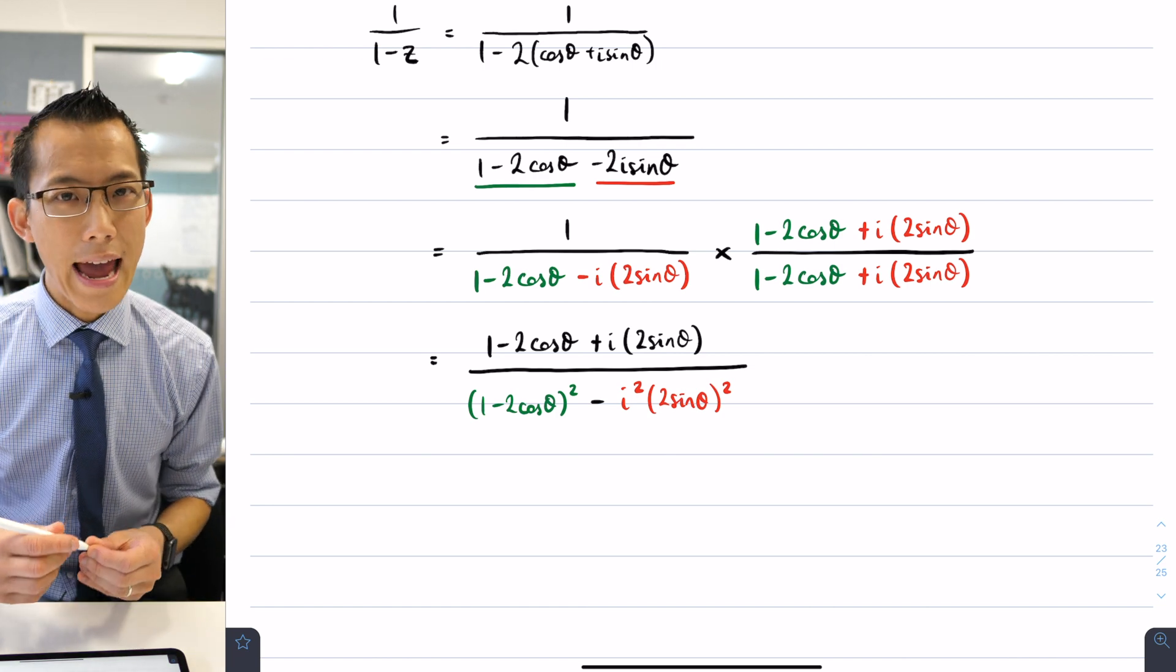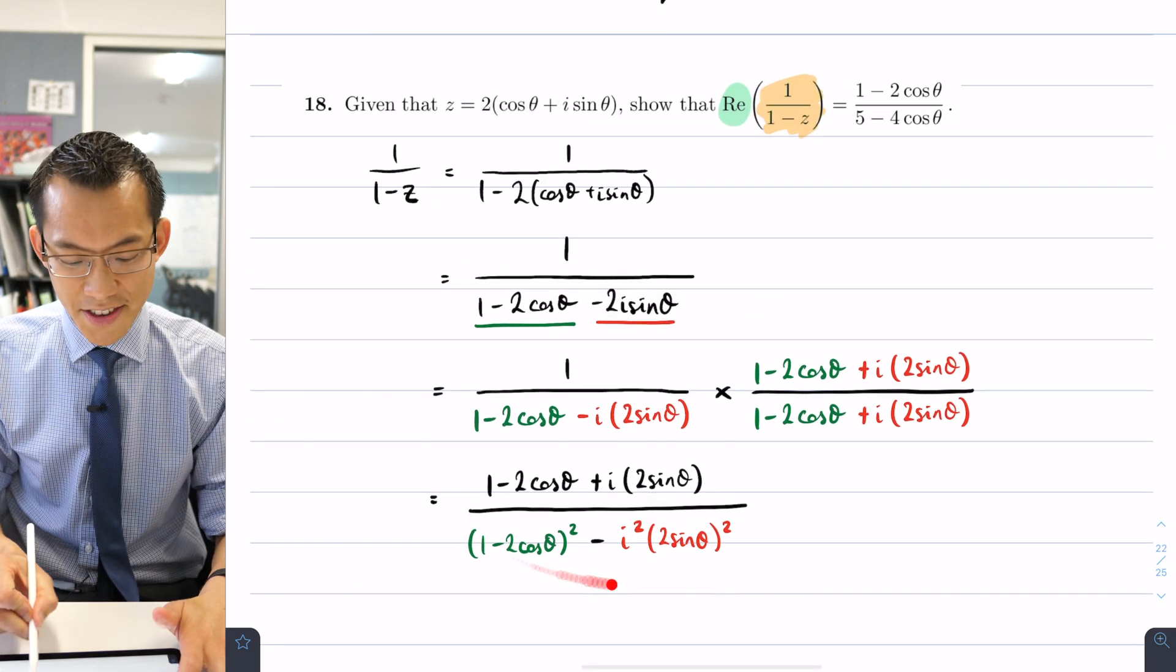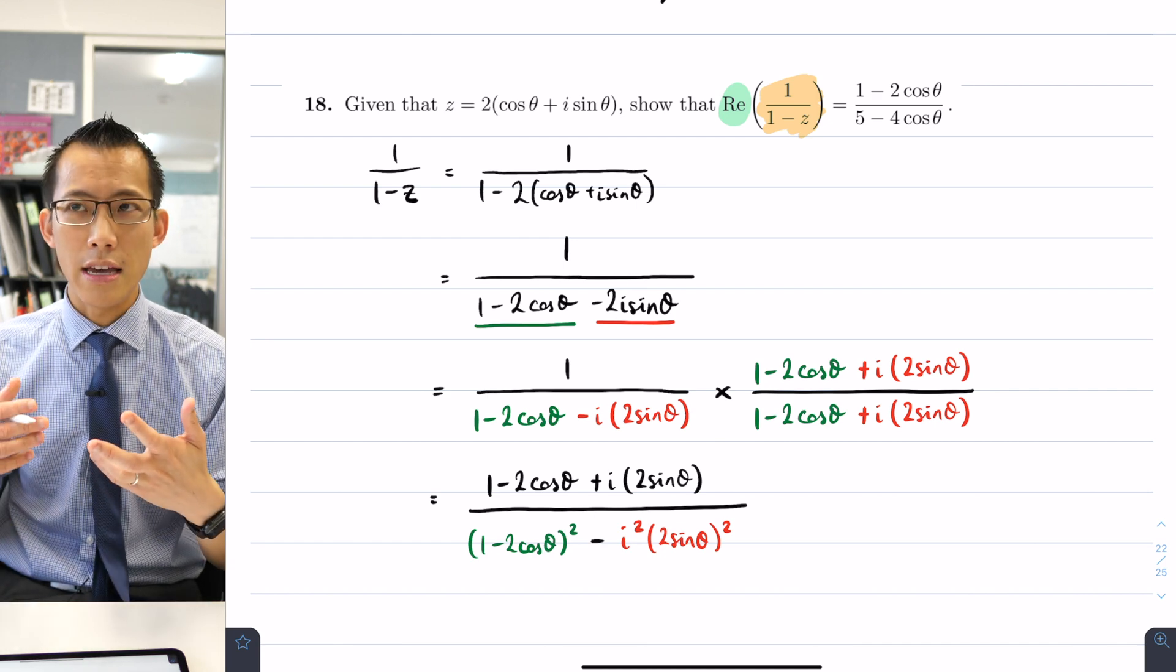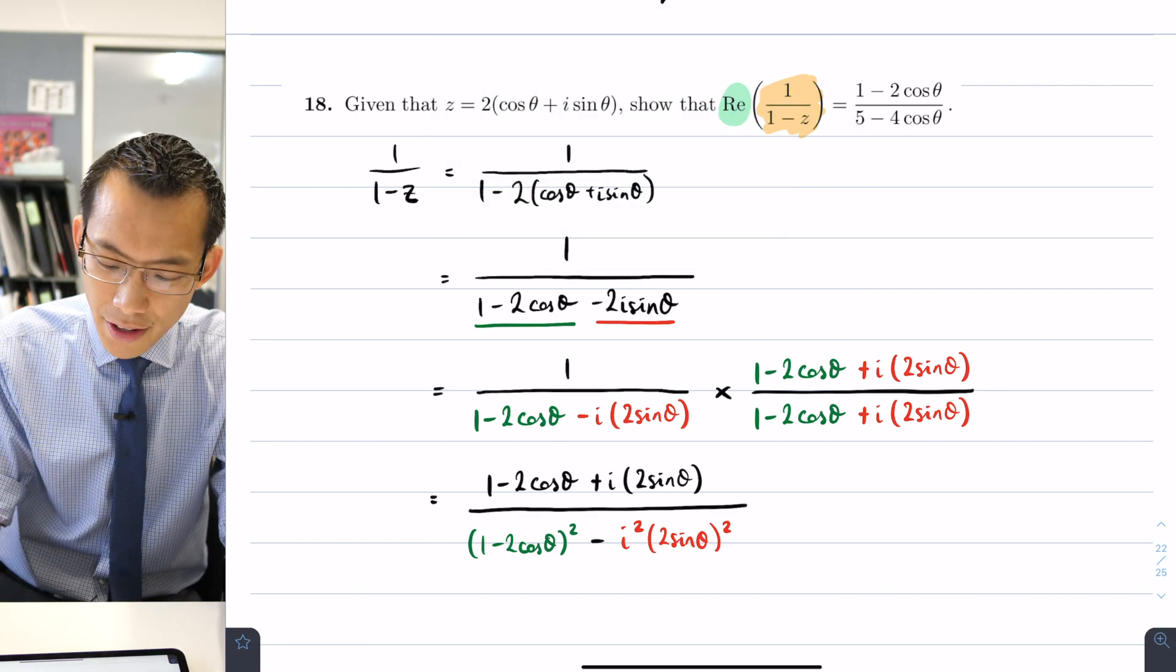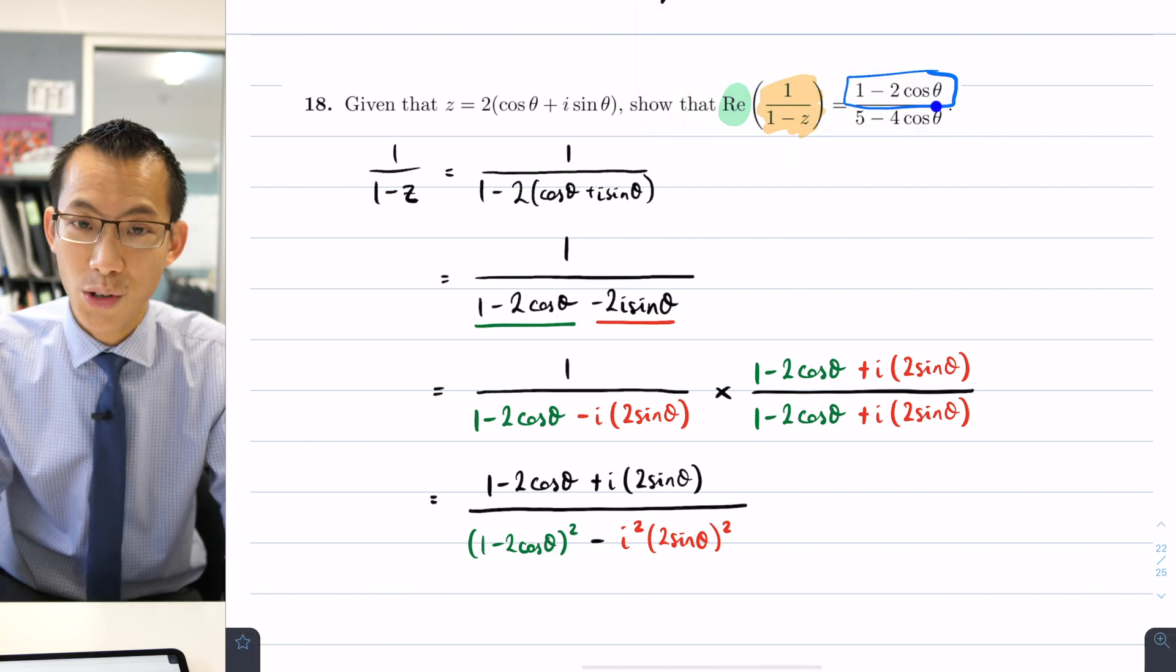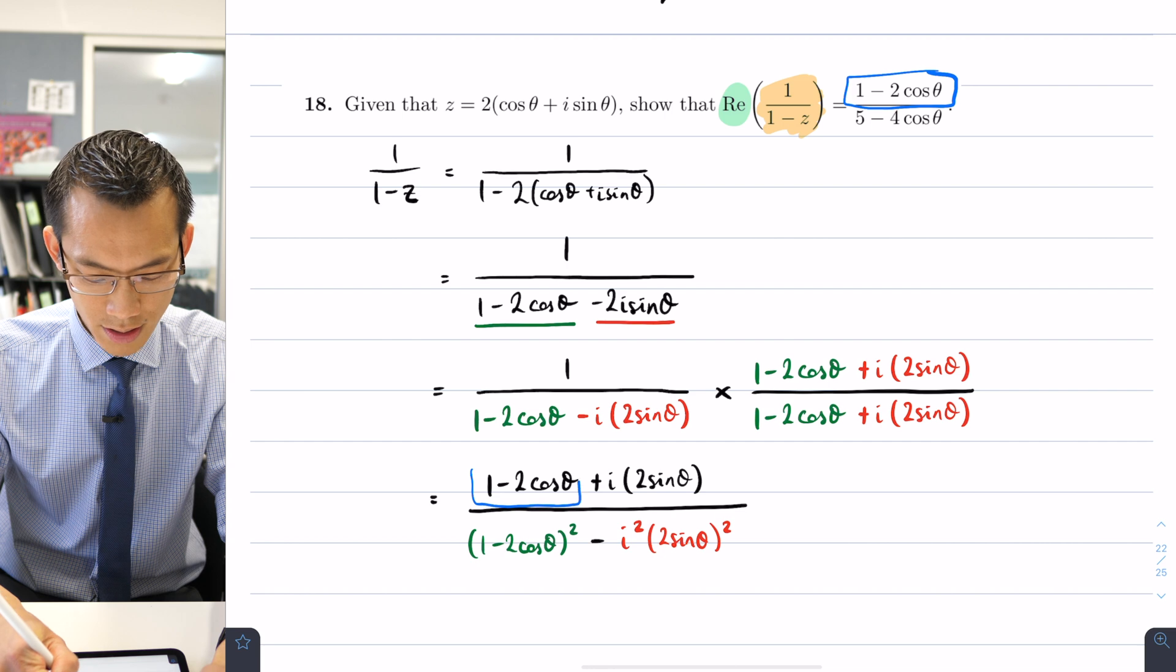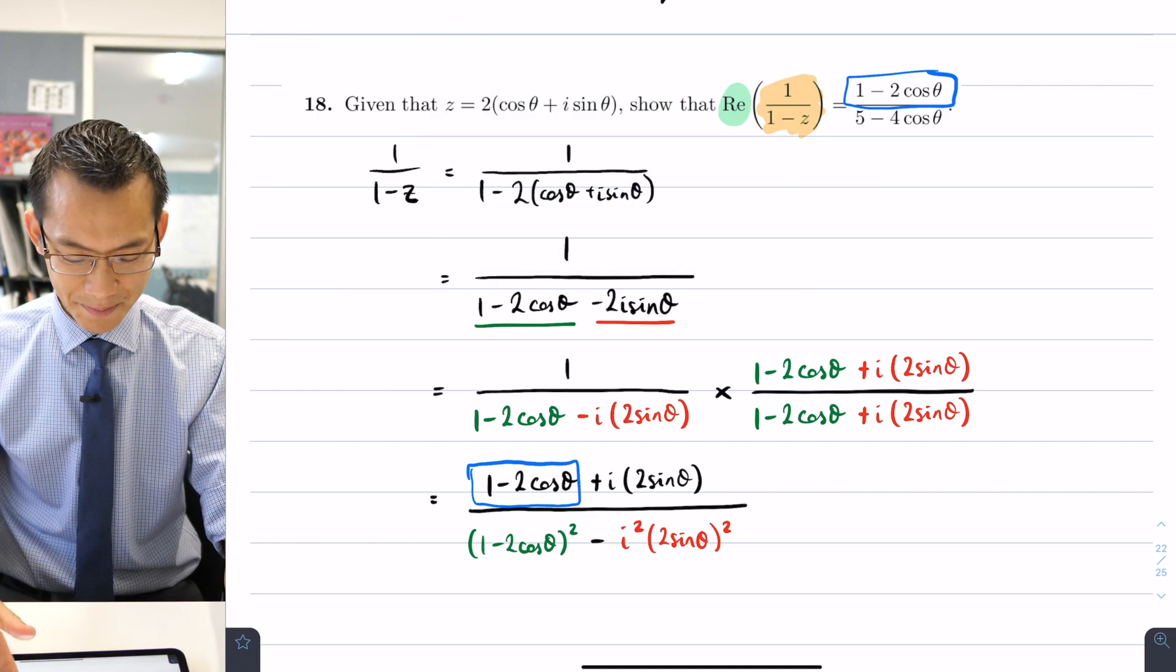Before I do more simplifying, I just want to highlight: whenever you're doing a trigonometric identity proof of any kind, it's always helpful to keep one eye on the thing that you're working on and another eye on where you're trying to go—your destination—because that will guide the simplifying that you do. If you have a look at the numerator up here, this is where I'm headed. This 1 - 2cos θ—you can see it's appeared over here—and not just has it appeared, but it is the real part of the numerator, which is of course what we're going to be dealing with. So I don't really need to do all too much more on the numerator; it's kind of ready to go. I just need to work with my denominator.